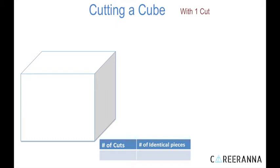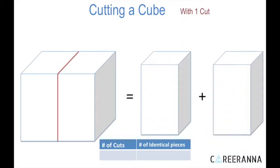Talking about cutting a cube with one cut — all of us know that if we cut anything with one cut, we get two pieces. Similarly, if I cut anything with five parallel cuts, I'll get six pieces. So whenever I use n number of parallel cuts, I always have n plus one number of pieces. So if I cut this cube right from the middle with only one cut, I'll have two identical pieces.